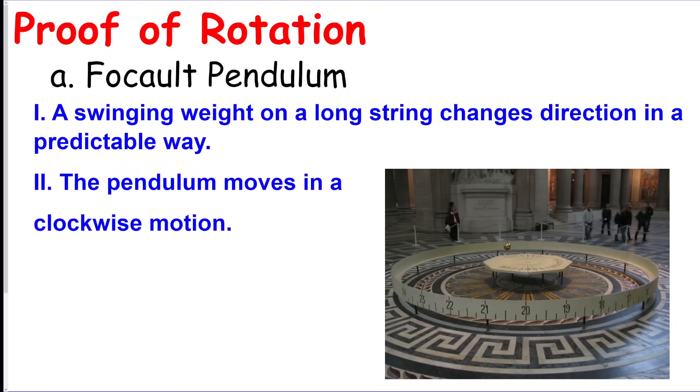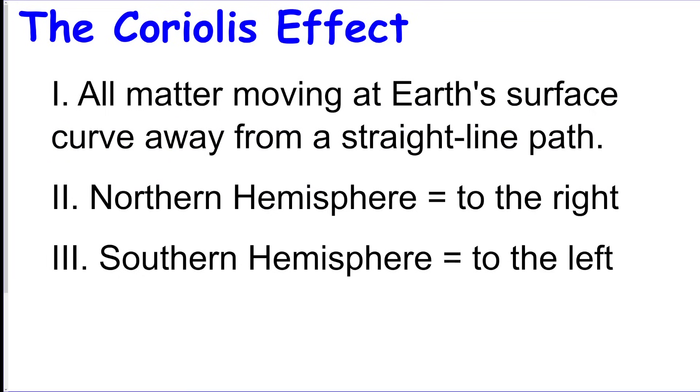All right, the Earth rotates. We know this because of a Foucault pendulum. It is a swinging weight and it moves clockwise and knocks over pegs as the experiment. We also have the Coriolis effect, the fact that the winds curve. In the northern hemisphere they curve to the right, and the southern hemisphere they curve to the left. This proves that the Earth rotates.